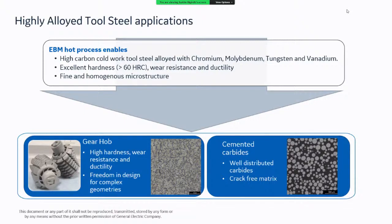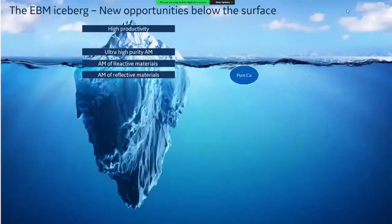With the EBM process you obtain a fine and homogeneous microstructure, as seen in the image — a fully developed, homogeneous microstructure. This is demonstrated in the gear hub application shown on the left. We have also been able to print cemented carbides with a well-distributed matrix and well-distributed carbides within the matrix material. Critically, all of these materials have been produced crack-free — a key enabler with EBM.